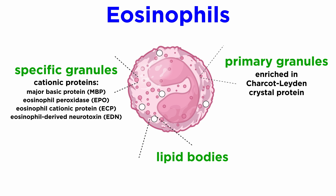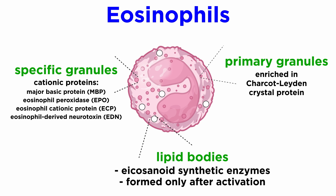Eosinophils also contain typical lipid bodies, which are cytoplasmic structures lacking a surrounding membrane and contain eicosanoid synthetic enzymes. Lipid bodies are formed rapidly only after activation of eosinophils, unlike the other preformed mediators.